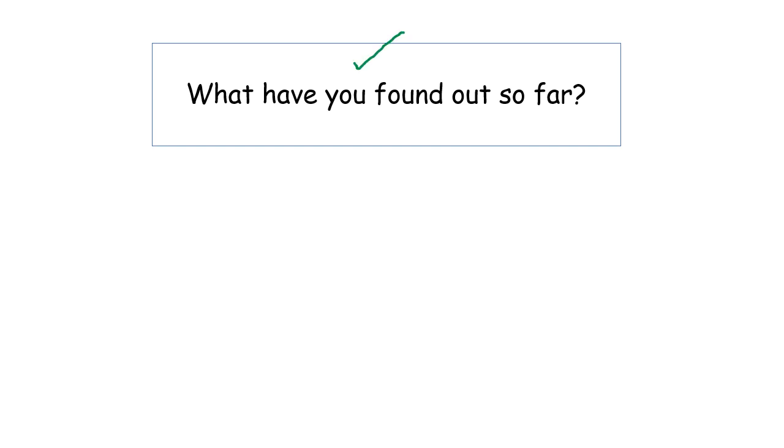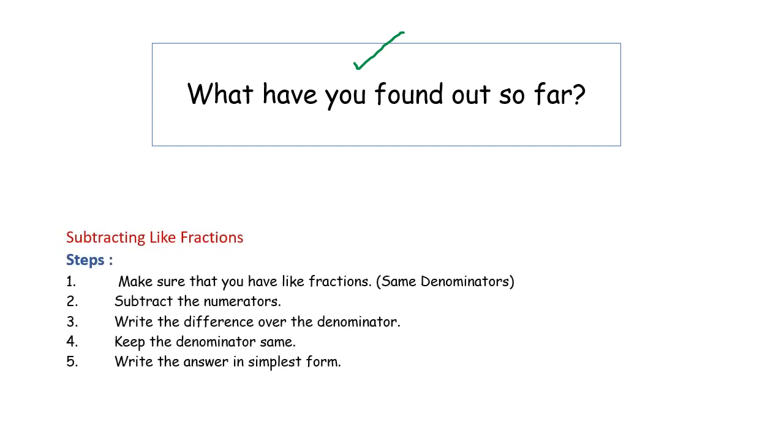What have you found out so far? We have found out how to subtract like fractions. And there are few steps to subtract like fractions. Make sure that you have the same denominator. Subtract the numerator. Write the difference over the denominator. Keep the denominator same and write the answer in simplest form.